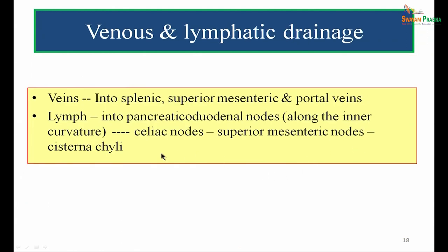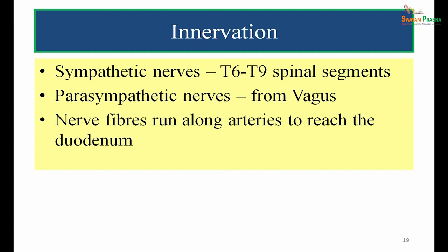Venous drainage is into the splenic veins, superior mesenteric veins, and finally into the portal vein. Lymphatics drain into pancreaticoduodenal nodes along the inner curvature of the duodenum, then into celiac nodes, superior mesenteric nodes, and finally into the cisterna chyli from where the thoracic duct arises. Nerve supply is autonomic: sympathetic fibres arise from T6 to T9 spinal segments, and parasympathetic fibres are derived from the vagus. These nerve fibres run along the arteries to reach the duodenum.